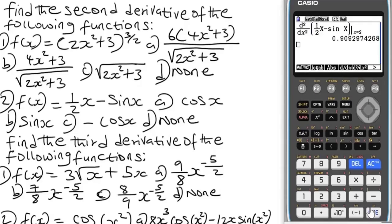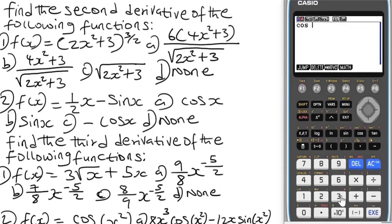Press EXE. We get a result. Right now we're going to simplify the options — whichever gives the same value is your answer. Delete, then check option A: cos x. That is not the answer. Check option B — we navigate and replace cos with the correct expression. Confirmed — the answer is option B. Check option C — it gives a different value. So the answer is option B.